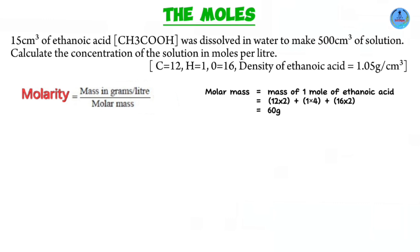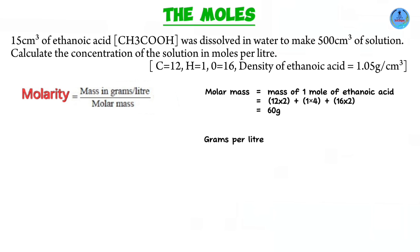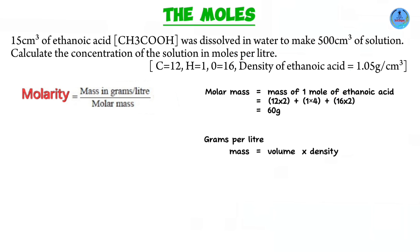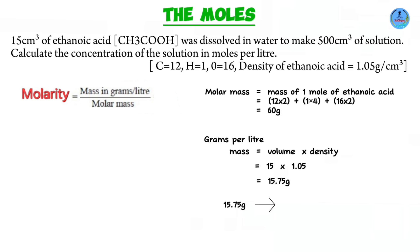For the grams dissolved in one liter, we don't know the mass of ethanoic acid, but we know its volume and density. Mass equals volume multiplied by density: 15 multiplied by 1.05 gives the mass of ethanoic acid dissolved to form 500 cubic centimeters of solution — that's 15.75 grams. But we need the mass dissolved in one liter, equivalent to 1000 cubic centimeters. Cross multiplying gives us 31.5 grams dissolved in one liter.